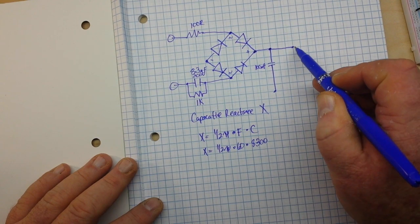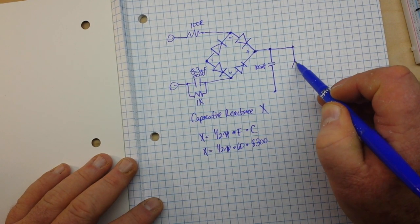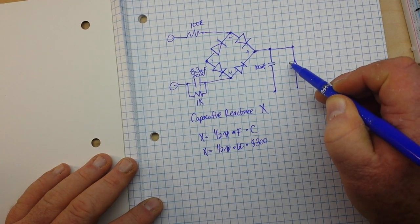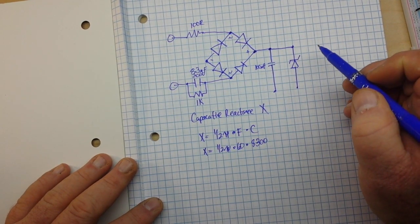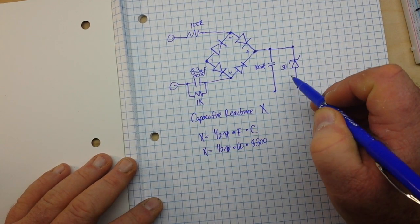And then for regulation, we're going to bring in a reverse biased Zener diode - in this case a 5 volt Zener.